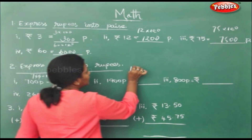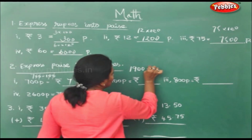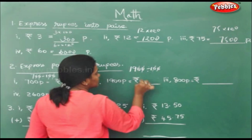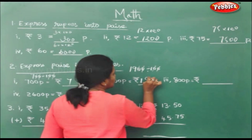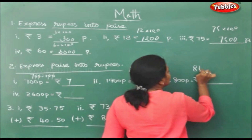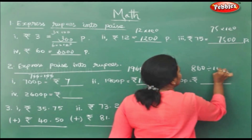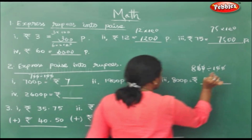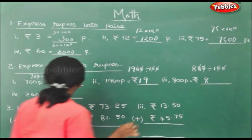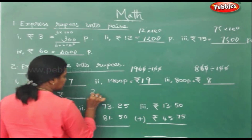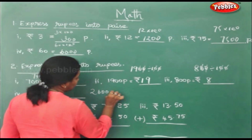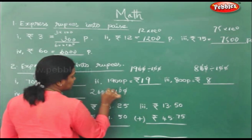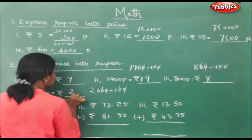Here, 1900 divided by 100 gives rupees 19. Here, 800 divided by 100 gives rupees 8. Here, 2600 divided by 100 gives rupees 26.